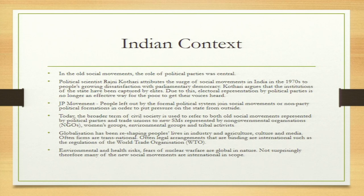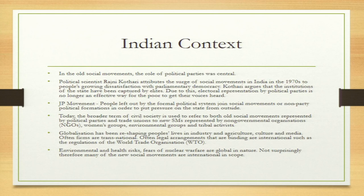The JP movement called for an end to Congress rule. Indira Gandhi's government imposed Emergency because it was a near-revolutionary situation — the JP movement was likely to overthrow the government. People left the formal political system, and the JP movement had two major demands: one, corruption was at an all-time high; and two, there was price rise, which we also call inflation. Corruption and inflation were the two major issues.